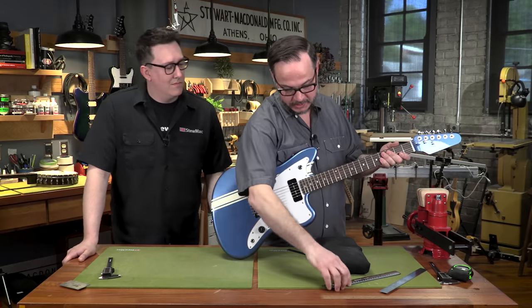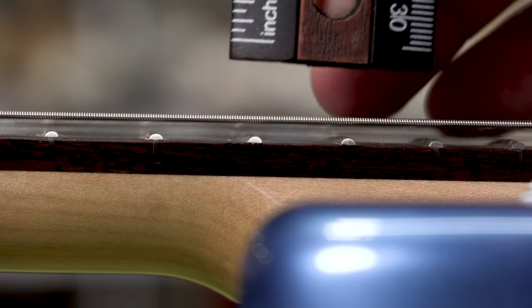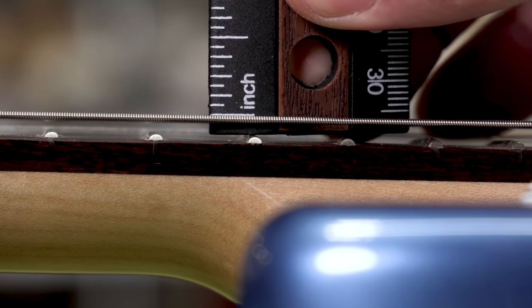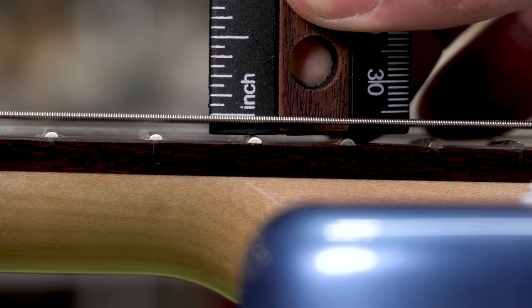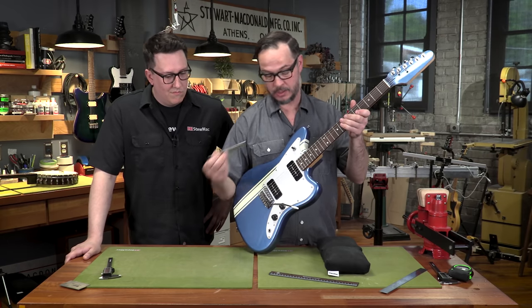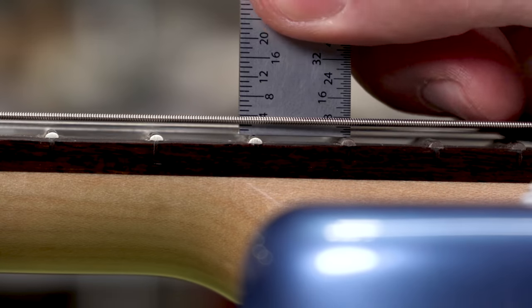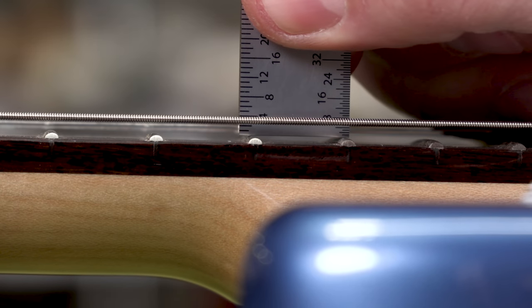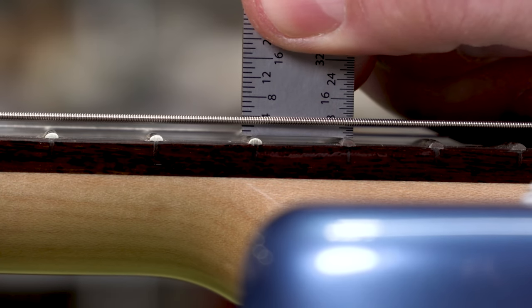For instance, if I was going to check the action on this guitar, the ruler is not going to work. The action doesn't even register where the increments start. But now this rule, since it starts right at the edge, I can get right in here at the 14th fret, which is where I check. Lots of people check on the 12th fret or at the end of the neck, and I'm getting right about 3/32nds of an inch. Can you see that? Yeah, okay cool got it.